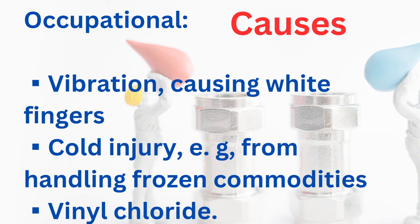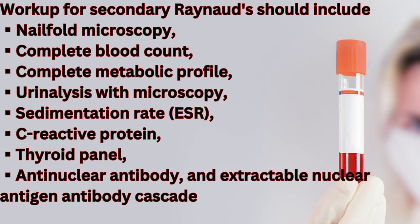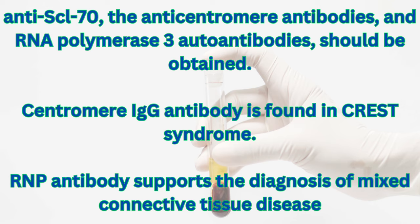Workup for secondary Raynaud's should include nail fold microscopy, complete blood count, complete metabolic profile, urinalysis with microscopy, sedimentation rate (ESR), C-reactive protein, thyroid panel, anti-nuclear antibody, and extractable nuclear antigen antibody cascade. If the ANA is positive, protein electrophoresis with immunofixation electrophoresis should be obtained. Specific tests for scleroderma, such as anti-SCL-70, anti-centromere antibodies, and RNA polymerase-3 autoantibodies, should also be obtained.